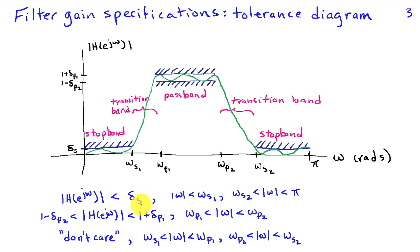We can write this out analytically, this illustration of this diagram. We say that in the stop band, we require that the magnitude response of the filter be less than delta s. And in this particular band pass case, that would be for magnitude of omega less than omega s1.